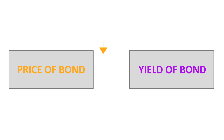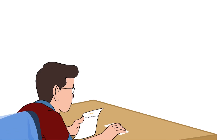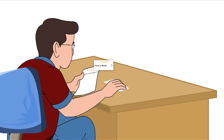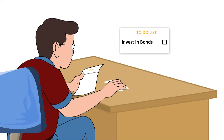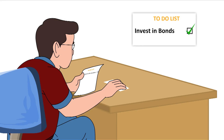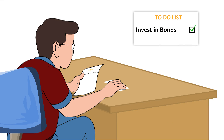Mudra figures out that when the price of a bond goes down, the yield goes up and vice versa. Now that he understands returns on bonds better, Mudra finds himself better placed to decide his investments in bonds.